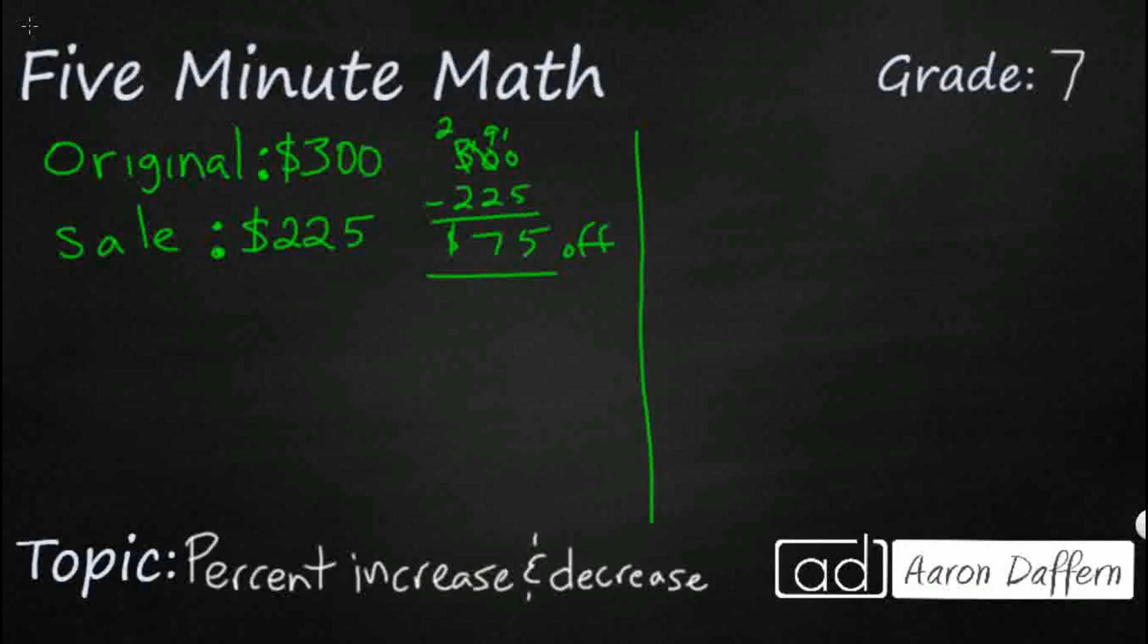The numerator is going to be your change and then your denominator is going to be your original. So what was the original price? Well the original price was $300. So now we've got a fraction of $75 over $300 and then what we need to do is we simply need to reduce.